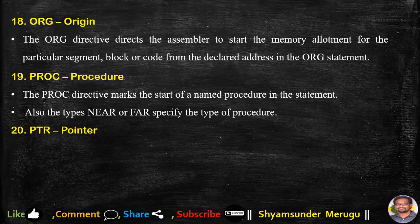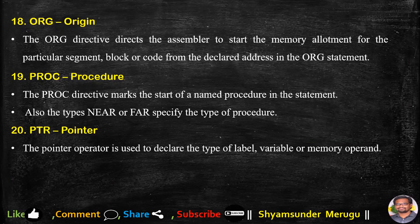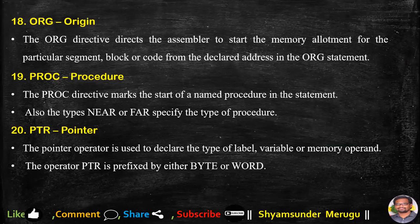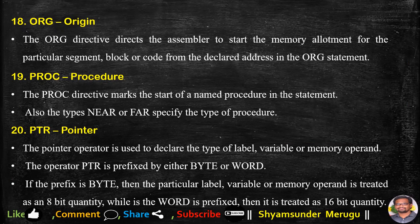PTR stands for pointer. The pointer operator is used to declare the type of a label, variable, or memory operand. The PTR operator is prefixed by either BYTE or WORD. If the prefix is BYTE, the label, variable, or memory operand is treated as an 8-bit quantity. If WORD is prefixed, it is treated as a 16-bit quantity.